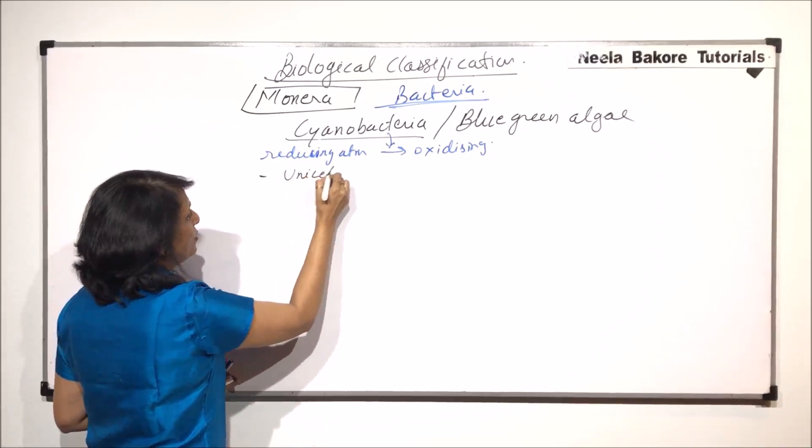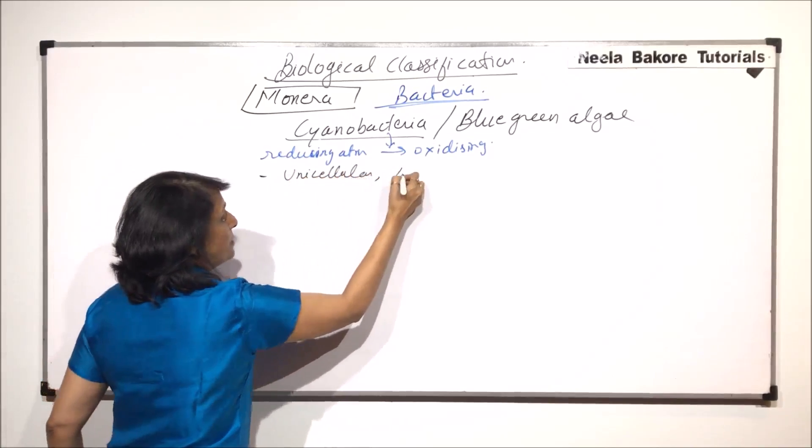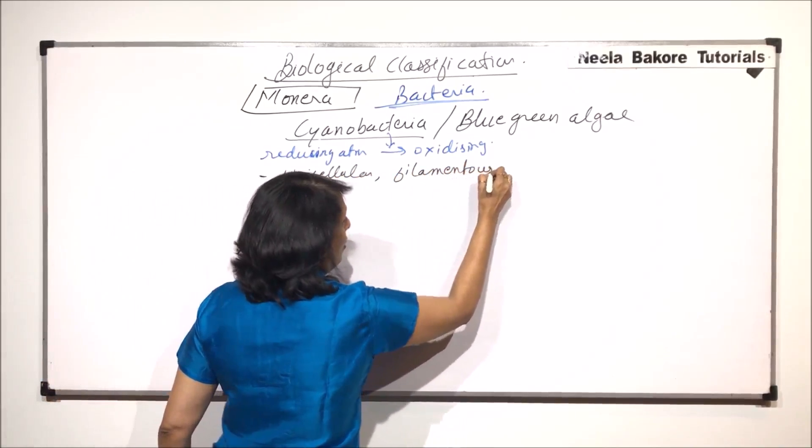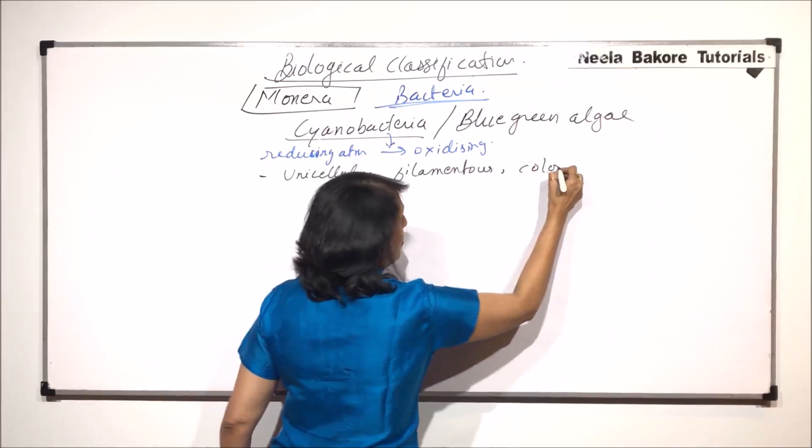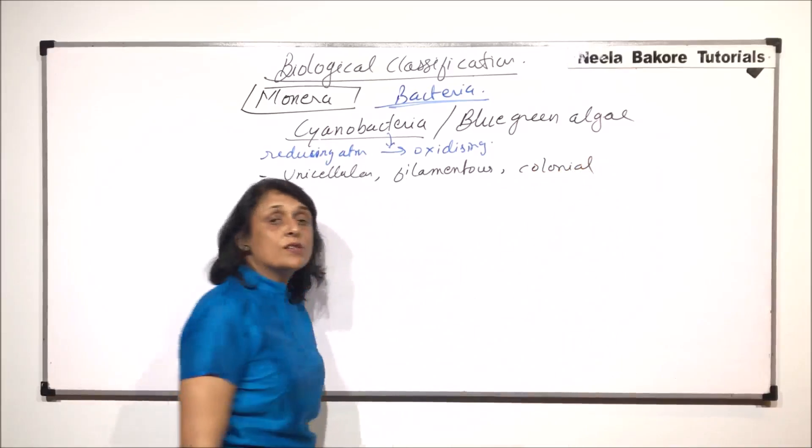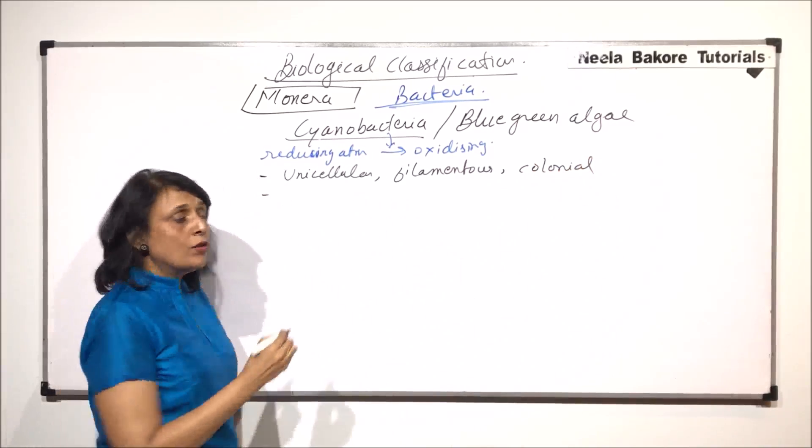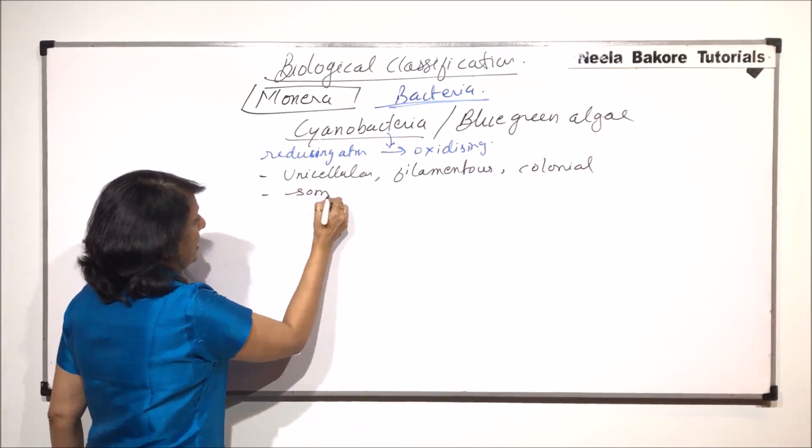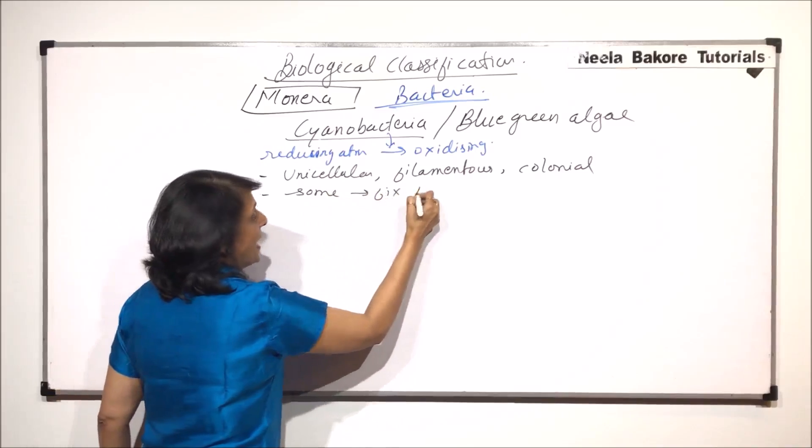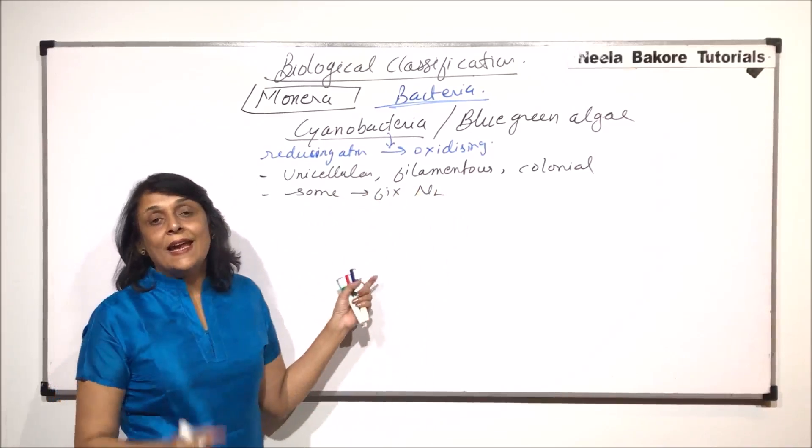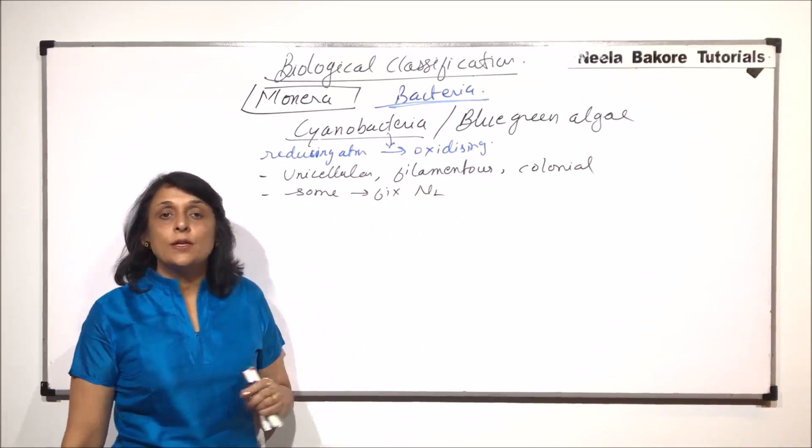They can be unicellular, they can be filamentous or they could be colonial. That means the cells could be found in the form of a colony. Some of these cyanobacteria can fix nitrogen. For fixing nitrogen, the enzyme which is required is nitrogenase.